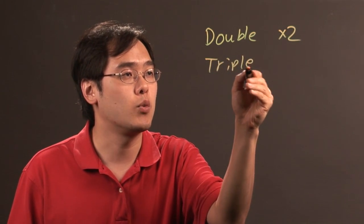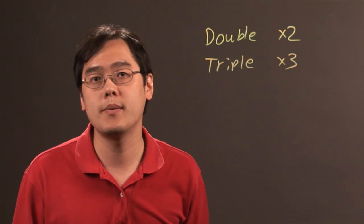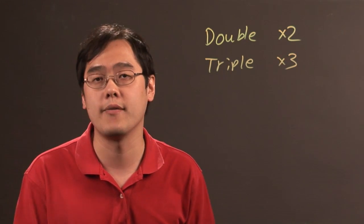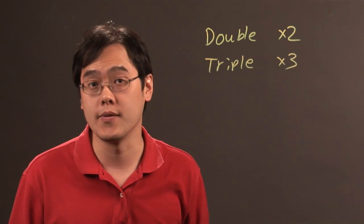Now similarly if you think about the word triple, when you're tripling something that means you're multiplying by 3. So you're talking about your 3 times table. So if you have the number 4 and you're tripling it, you're multiplying it by 3 which is going to give you 12.